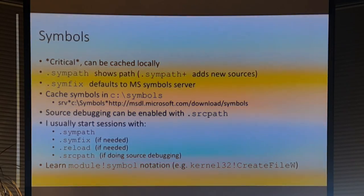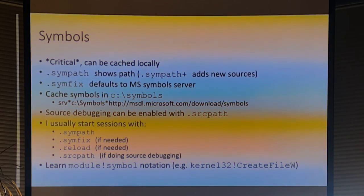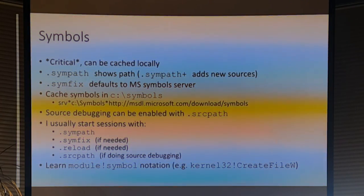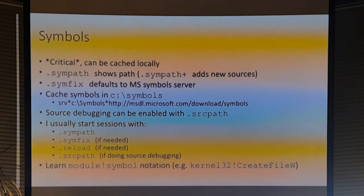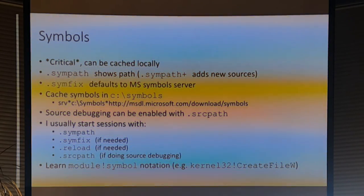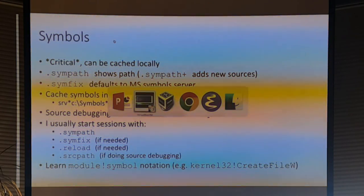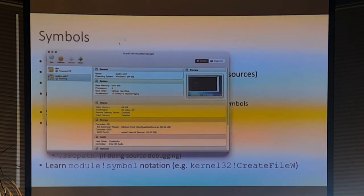There is source debugging for native code — .srcpath is the command for that. The basic idea is you first start by looking at the symbol path and making sure you can get symbols. If all else fails, you do .symfix and then .reload to force symbols to get pulled for the Windows DLLs and other things that are loaded. Then you can set the source path if you need to.